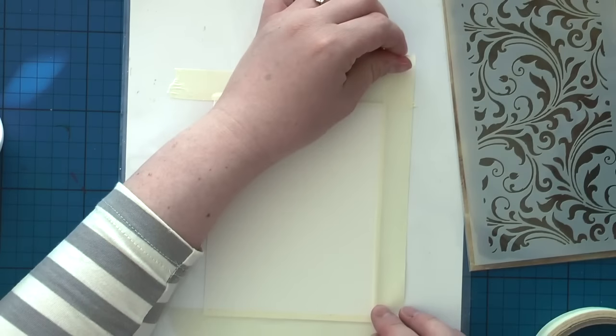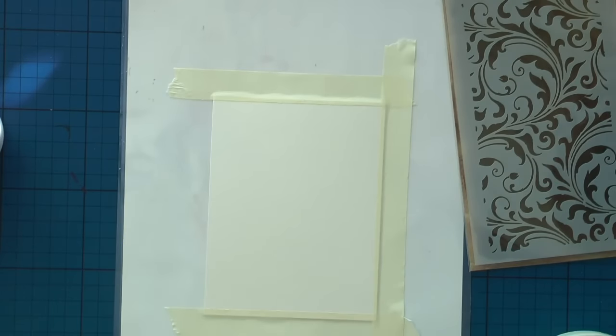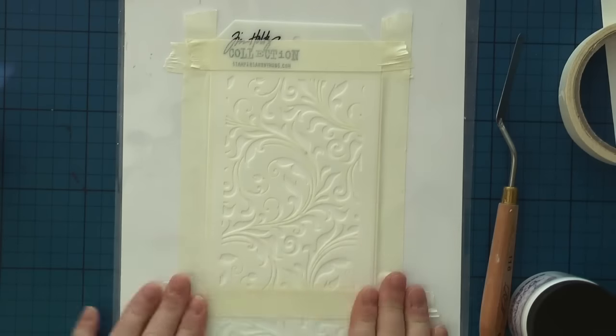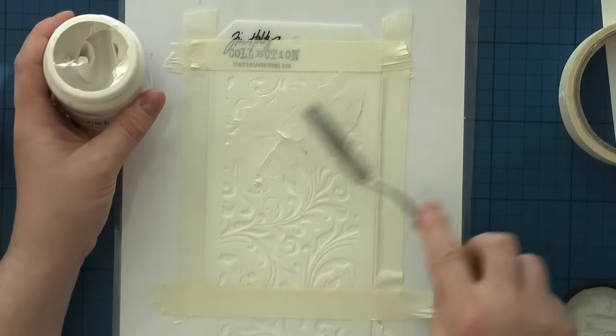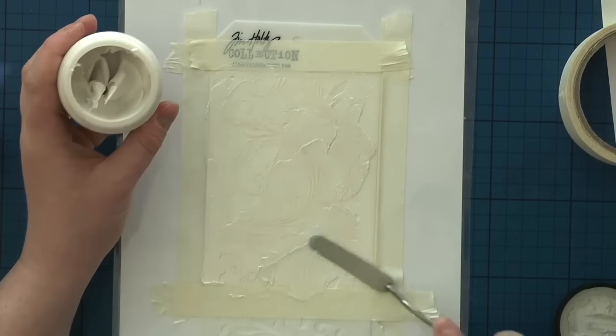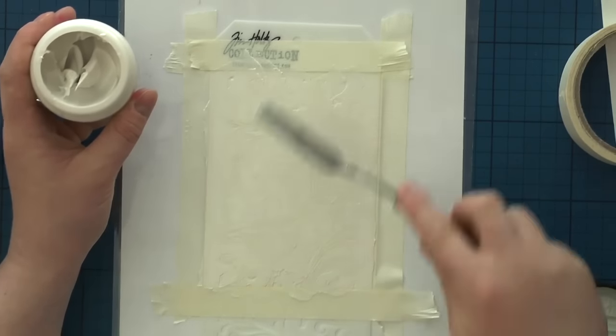I start by adhering a very thick piece of watercolor cardstock to my surface, which in this case is a laminated piece of printer's paper. I use masking tape to adhere both cardstock and stencil, and now I'm using Dreamweaver pearl embossing paste to cover my stencil.